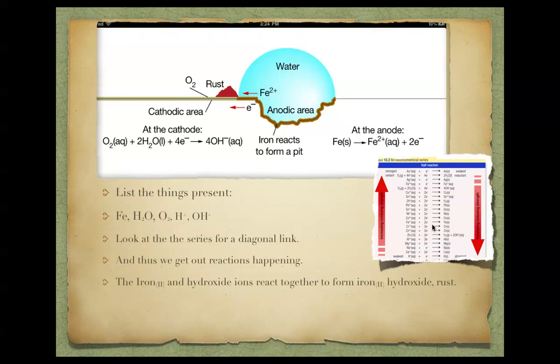I can write down what these reactions are going to be, and here's my first one. Oxygen and water is reacting with four electrons to form the hydroxide ion. Then at my anode, I've got iron solid, it's going to form iron 2 plus and two electrons. This is the iron here going to form the iron 2 plus.